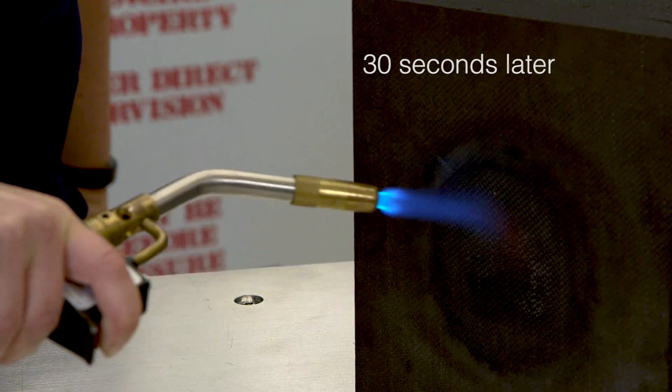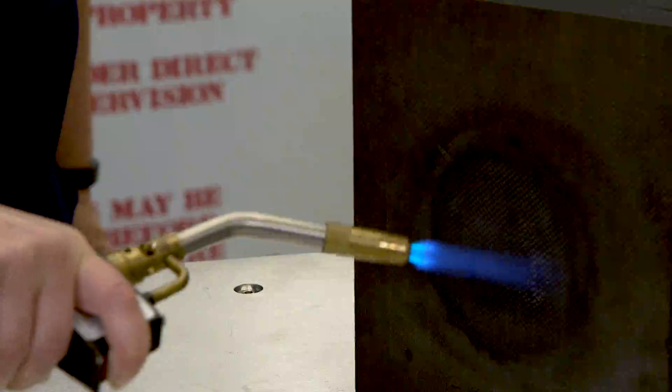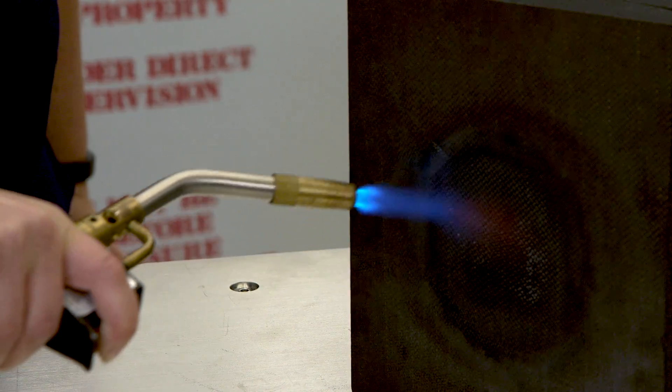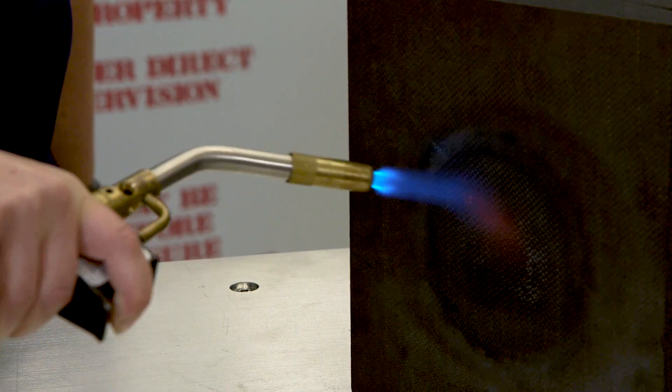You can start seeing it glowing red. The real heat shield gets up to about 2,500 degrees Fahrenheit, which we're not going to do today, but we are going to get it to a couple hundred degrees Fahrenheit.